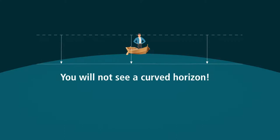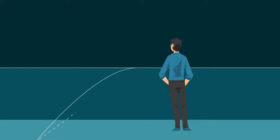Only from a very high vantage point will you see the curvature of the horizon, and since the earth is very big, the vantage point must be very high. You can, however, see the curvature in straight lines going towards the horizon, like a very long bridge or a very straight and long shoreline.